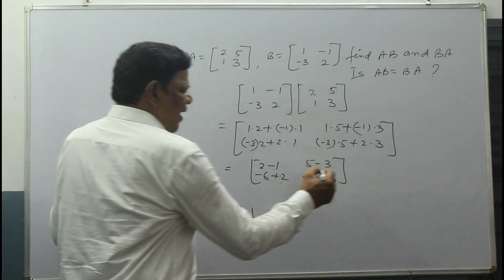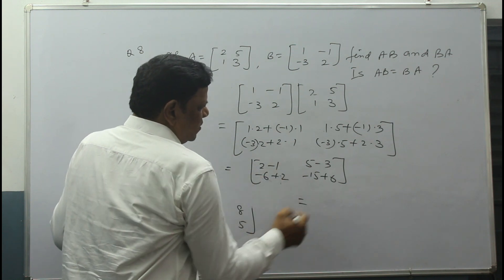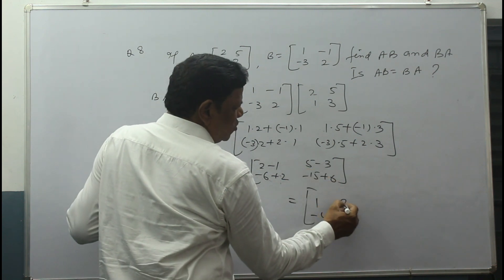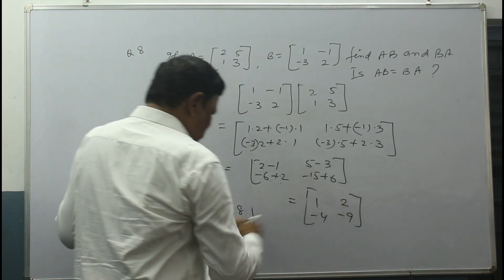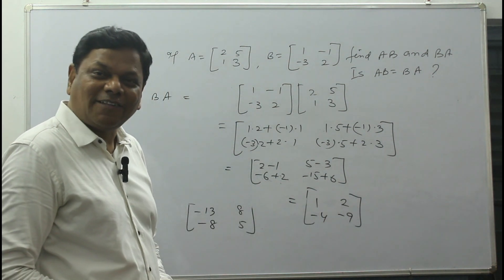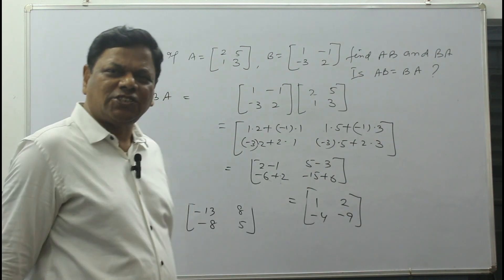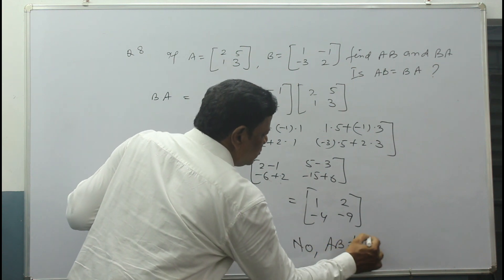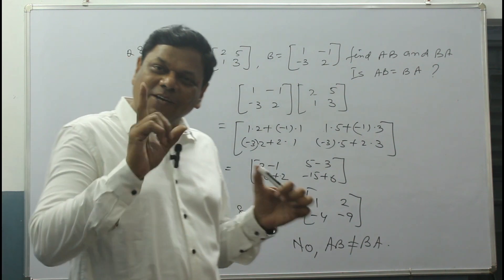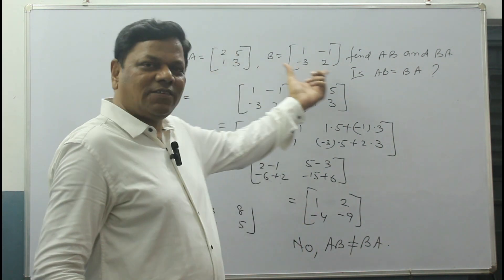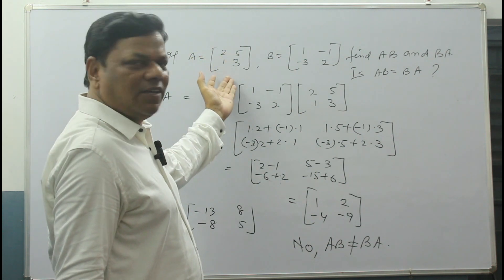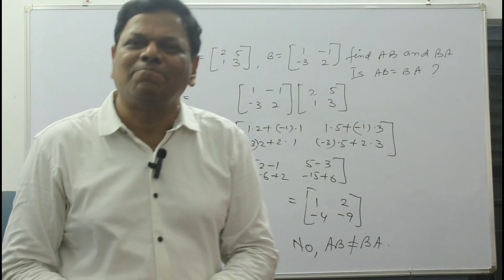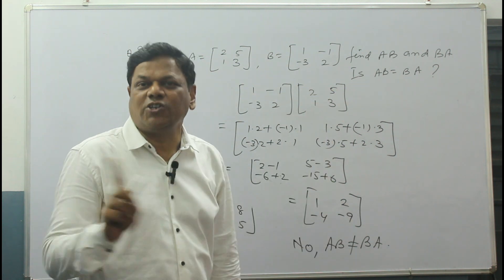Now see: AB = [[-13, 8], [-8, 5]] and BA = [[1, 2], [-4, -9]]. These two are not same. So AB is not equal to BA, as already explained. If the two matrices had been same — like if both were [2, 5, 1, 3] — then AB and BA would give the same result. But when the matrices are different, AB not equal to BA.